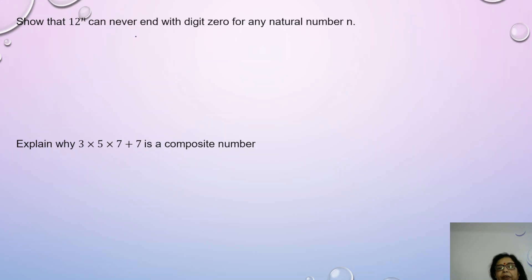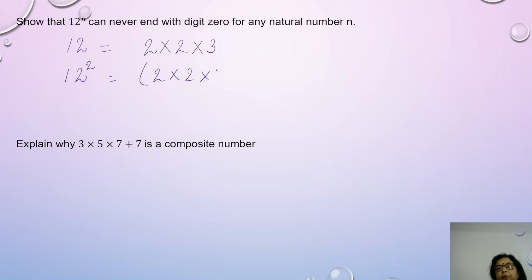Show that 12 to the power n can never end with a digit 0. Now if I take 12 and write down its prime factors, it's a composite number, so I get 2 × 2 × 3. Now if I increase 12 to an index, say 2, the prime factors are also going to be raised to index 2. If I take the index as n, the prime factors are also being raised to the index n.